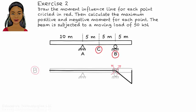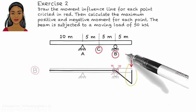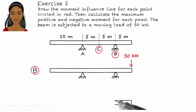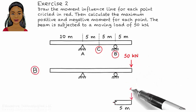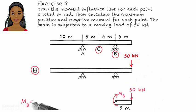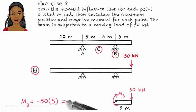The maximum negative moment at B occurs when the load is at the right end of the beam. To determine the magnitude of this negative moment, place the load at the right end of the beam and analyze it. This gives us a bending moment of negative 250 kNm.